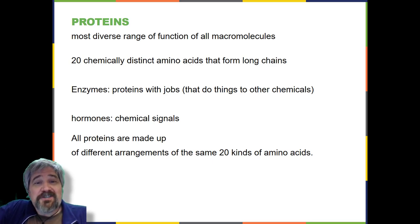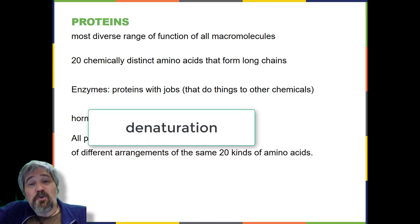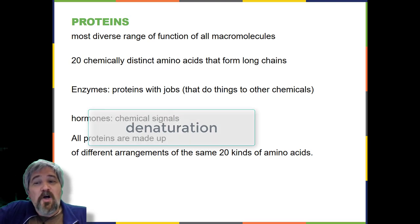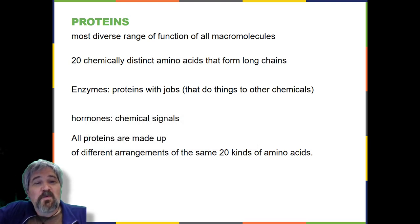Proteins have different shapes and molecular weights. Some proteins are globular in shape, whereas others are fibrous in nature. For example, hemoglobin is a globular protein, but collagen, found in our skin, is a fibrous protein. Protein shape is critical to its function. Changes in temperature, pH, and exposure to chemicals may lead to permanent changes in the shape of the protein, leading to a loss of function or denaturation. To be discussed in more detail later, all proteins are made up of different arrangements of the same 20 kinds of amino acids.